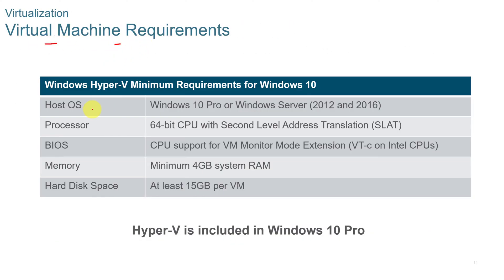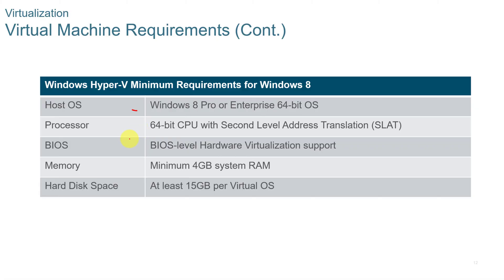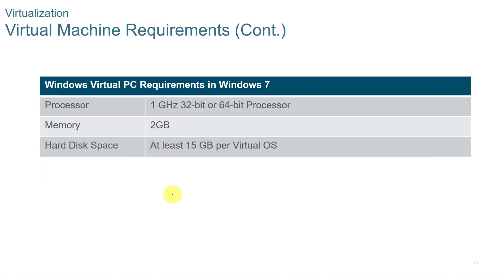For virtual machine requirements, you need a host OS — Windows 10 Pro or Windows Server is usually the minimum, although older versions like Windows 7 and 8 can work. The processor needs to be 64-bit with second-level address translation. You also need adequate BIOS support, memory, and hard disk space. You need enough storage for your main operating system plus each guest OS — at least 15 GB per OS for Windows 8, and at least 2 GB of RAM for Windows 7, though in practice you will need more than 2 GB.